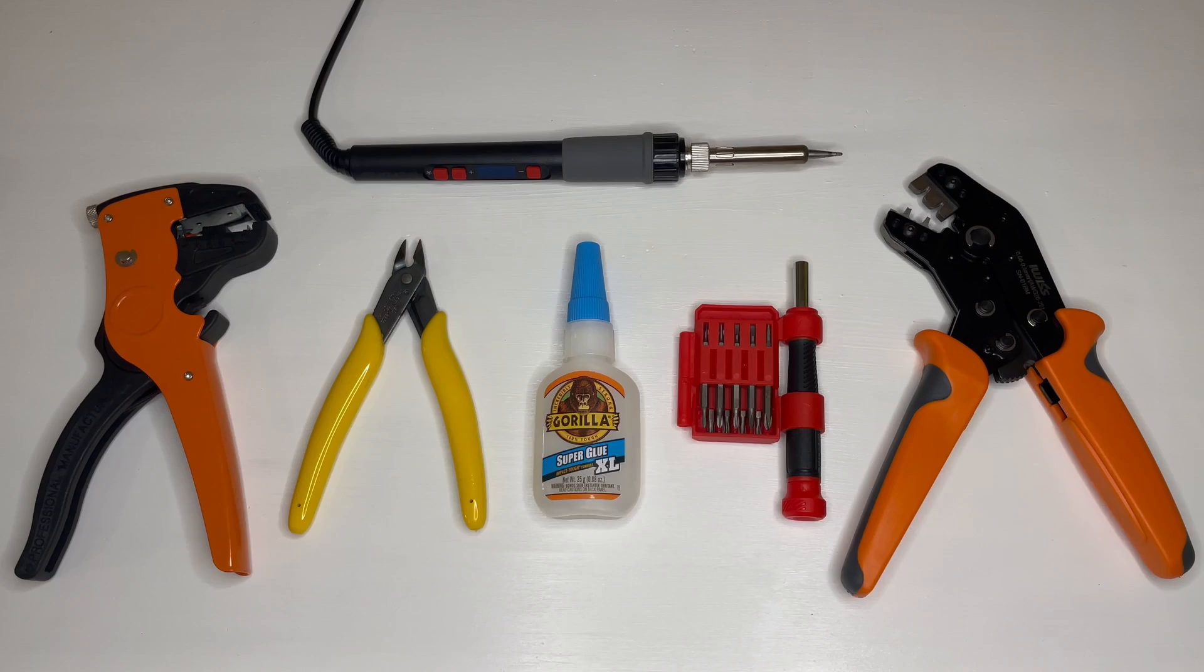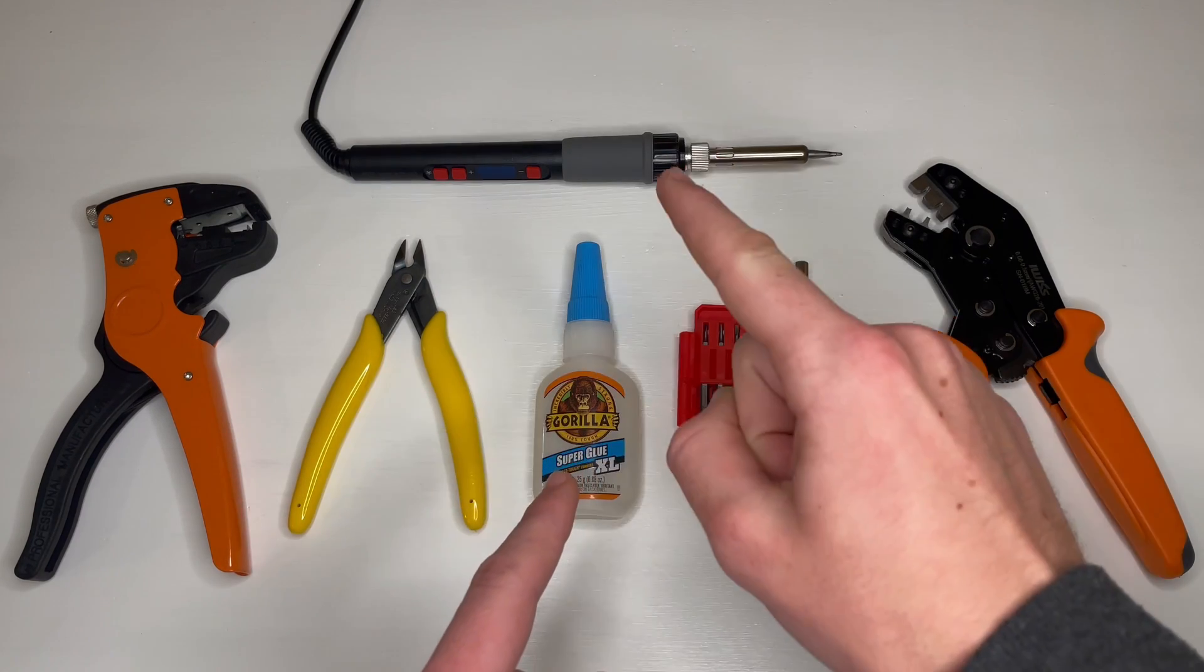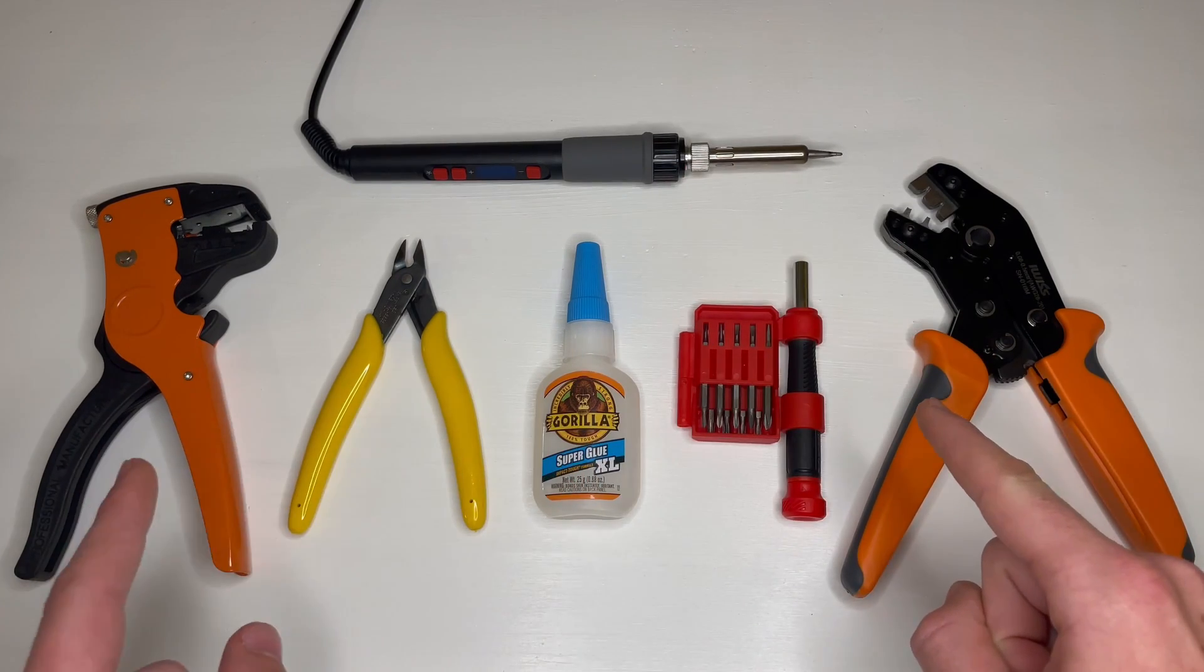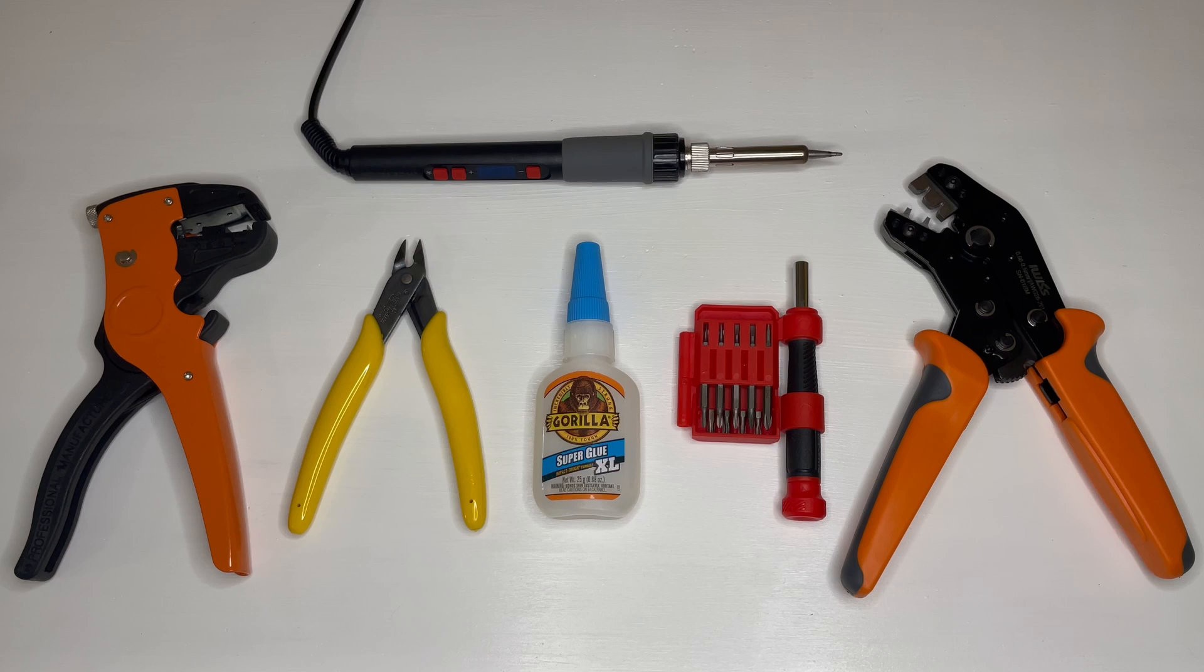And these are the tools I'll be using. I've got screwdrivers, glue, a soldering iron, crimpers, and a pair of cutters and wire strippers. Now there are many different ways to do most of the things I show in this video. I'm just presenting exactly what I did to build this arm, and if you find a different or better way of doing any of these steps, please don't hesitate to share it in the comments.